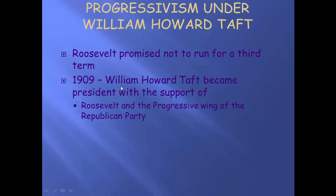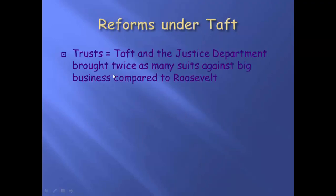So let's take a look at William Howard Taft — progressivism under Taft. Roosevelt is president for eight years. He probably would have been president again, but he decides he's not going to run — that's not what George Washington would have wanted. William Howard Taft became president with the support of Teddy Roosevelt and his whole progressive party. Taft is interested in breaking up trusts. The Justice Department brought twice as many suits against big companies compared to what Roosevelt did.